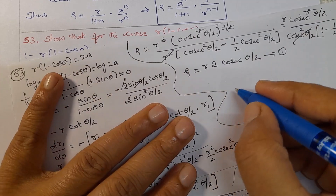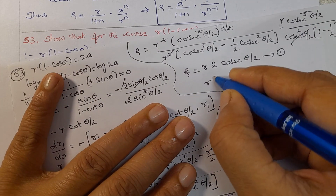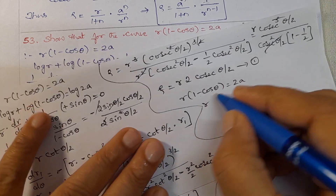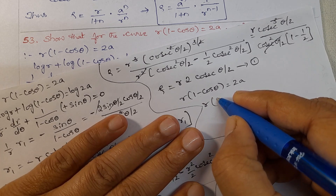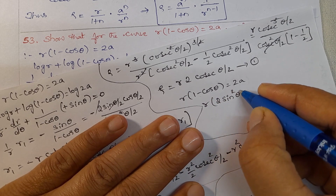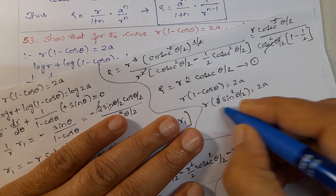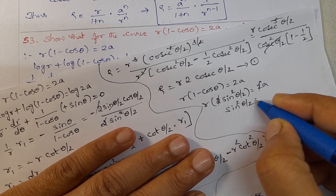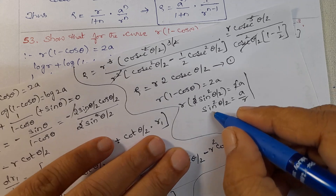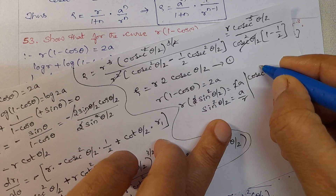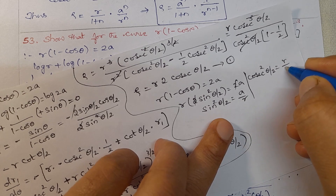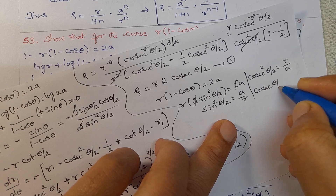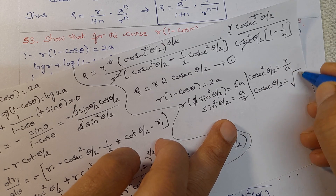From the original curve equation: r(1 - cos θ) = 2a, and 1 - cos θ = 2 sin²(θ/2), so 2r sin²(θ/2) = 2a. The 2's cancel giving sin²(θ/2) = a/r. Taking reciprocal: cosec²(θ/2) = r/a, so cosec(θ/2) = √(r/a). Call this equation 2.